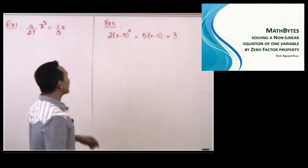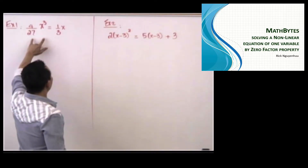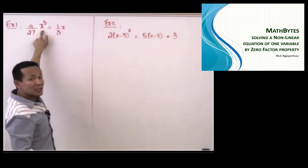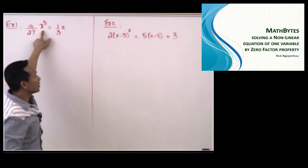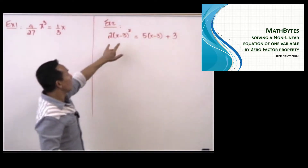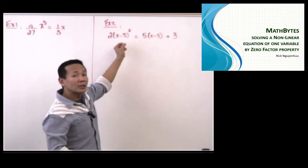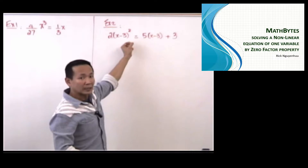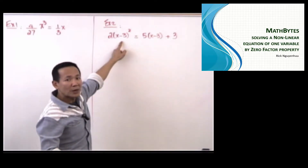This is the perfect example for a nonlinear equation and the degree now is three, so this equation may have up to three solutions. Over here, we have this quantity to the second power. If you FOIL this out, we have the second degree for the unknown x, so this equation may have up to two solutions.